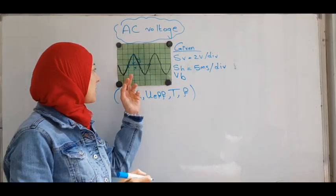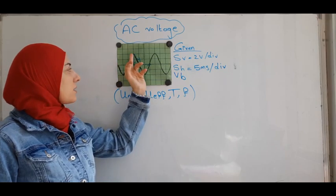In this graph, for example, X is four: one, two, three, four, and Y is two divisions.